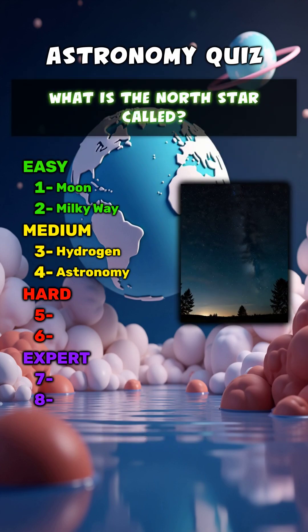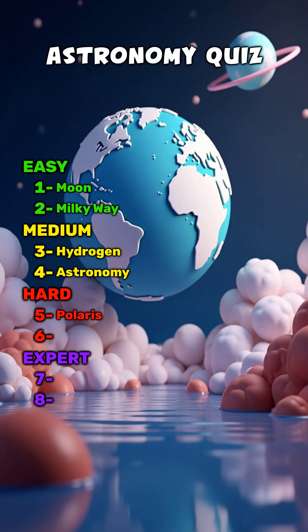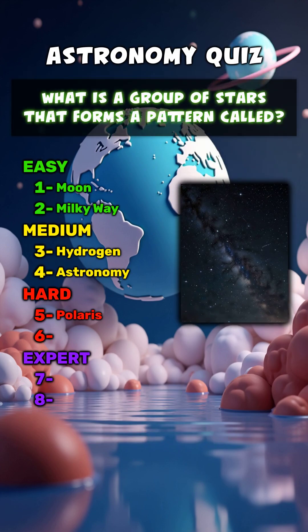What is the North Star called? Polaris. What is a group of stars that forms a pattern called? Constellation.